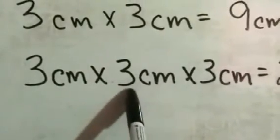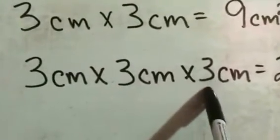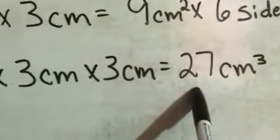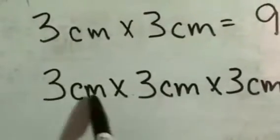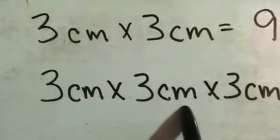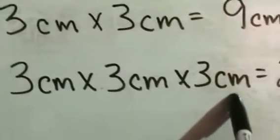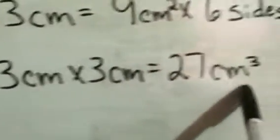So that's three times three, which is nine, times three, which is 27. Then we multiply the units. So you have centimeters times centimeters, so that's centimeters squared times another centimeter, so that's centimeters cubed.